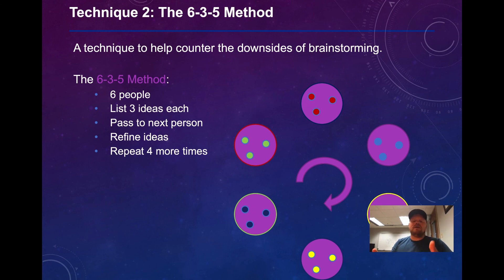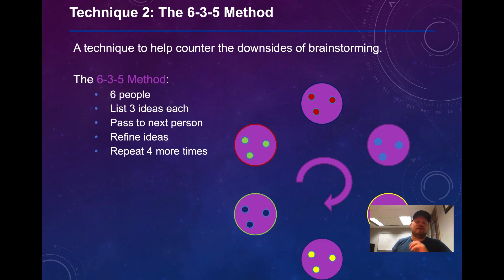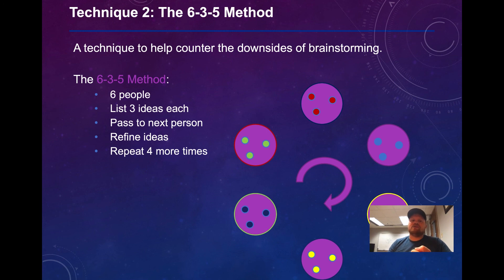If you wanted to do this with fewer people, the numbers change — for a group of three it would be 3-3-2 instead of 6-3-5. A quick review: we've introduced the engineering design process and some terminology, and drilled into the first two steps: define the problem and idea generation.